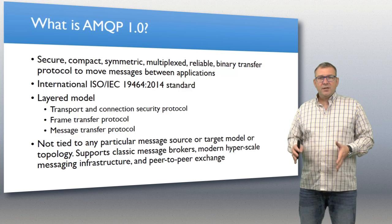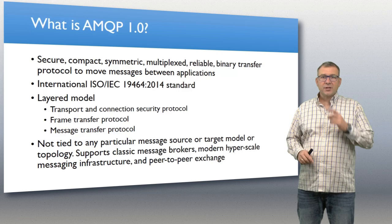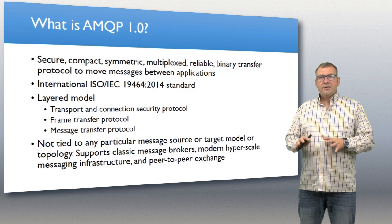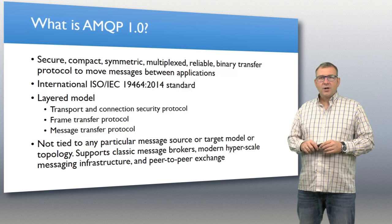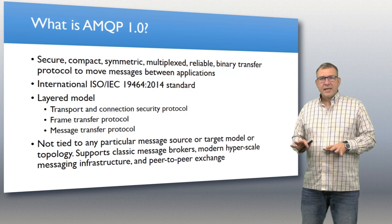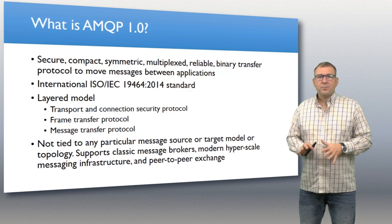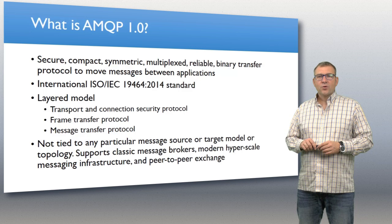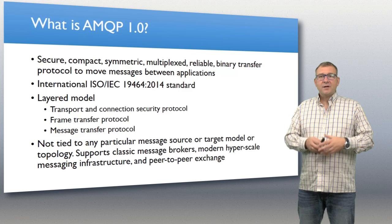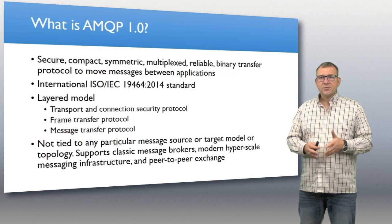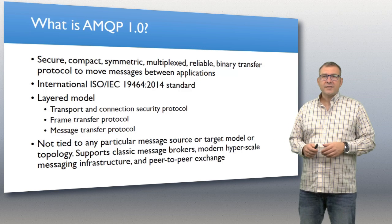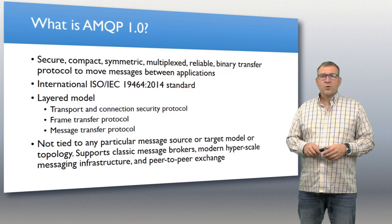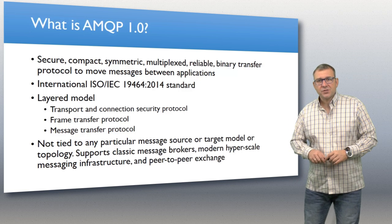Previous versions of AMQP — 0.8, 0.9 — some of those are still in use in other infrastructures. They have a very particular notion about a queue, a broker, exchanges, and so on. That is no longer the case in AMQP 1.0, which is great because we would not be able to build the kind of flexible infrastructures we've built — supporting queues, topics, and event hubs, which are large-scale ingestion systems. Those things would not have been possible with the prior draft versions.